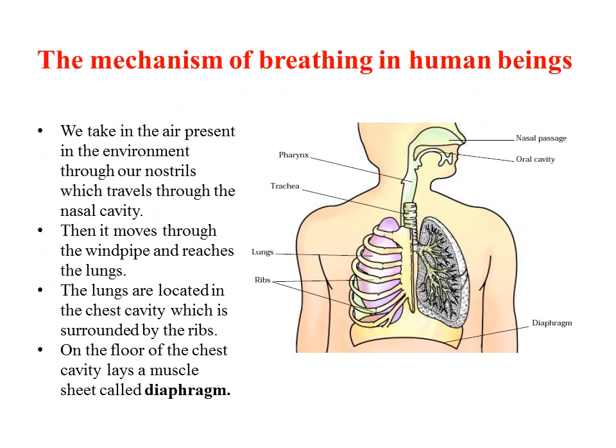Now, the mechanism of breathing in human beings: we take in air present in the environment through our nostrils, which travels to the nasal cavity, then moves through the windpipe and reaches the lungs. The lungs are located in the chest cavity, which is surrounded by ribs — you can see this in the picture. Below the chest cavity lies a muscle sheet known as the diaphragm.